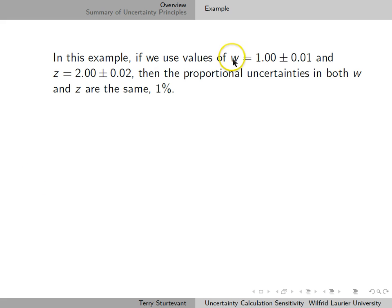In this example, if we use values of w is 1.00 plus or minus 0.01 and z is 2.00 plus or minus 0.02, then the proportional uncertainties in both w and z are the same, 1%.